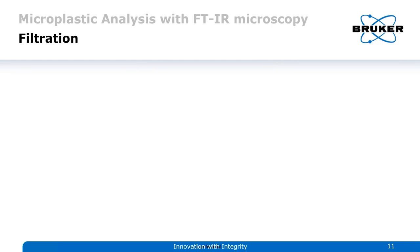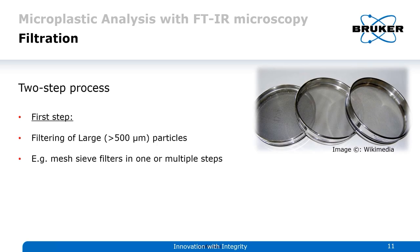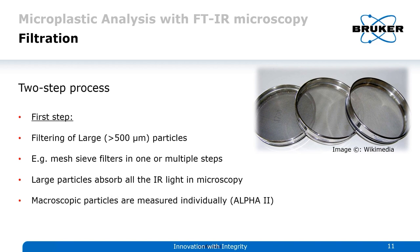When our sample is finally prepared, the remaining solution has to be filtered — mostly a two-step process. In the first step we filter off large particles, for example everything above 500 micrometers, using mesh sieve filters in one or multiple steps depending on particle sizes. We need to remove large particles because they absorb all the IR light in microscopy. For those we use the Alpha 2 spectrometer.